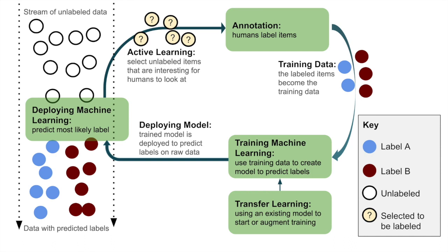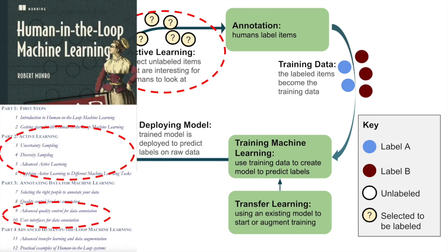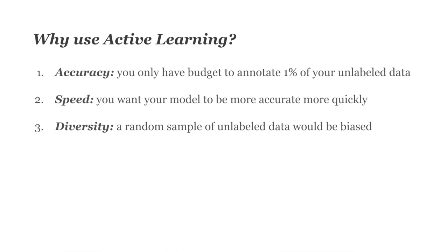Active learning is important when you have a very large number of unlabeled data items and lack the capacity to manually annotate all of them. It comes from Part 2 of my book, covering uncertainty sampling, diversity sampling, and advanced methods. Why use active learning? Accuracy is often cited as the main reason — if you have a budget to annotate just 1% of your unlabeled data, you want to make sure it's the most important 1%.